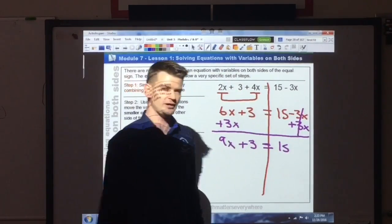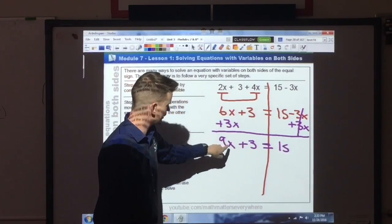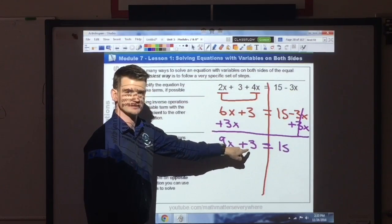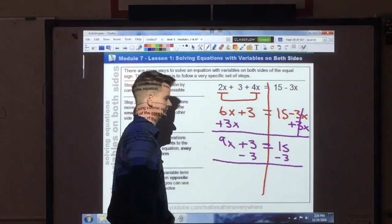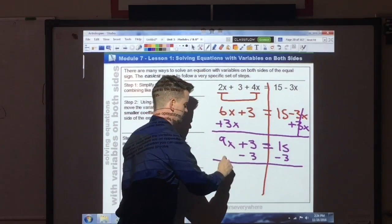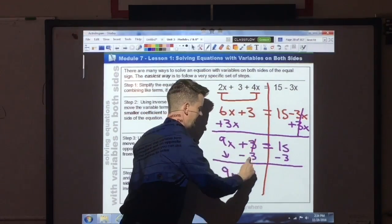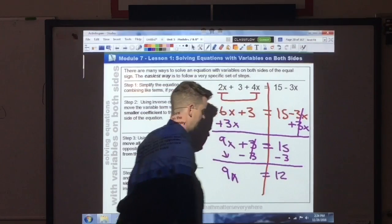Now that I'm here, I've got a two-step equation. We must isolate the variable term by getting rid of this constant. The inverse of positive 3 is negative 3, so I subtract 3 from both sides. Once again, working from left to right. Bring down the 9x. Cancels. Equals 12.